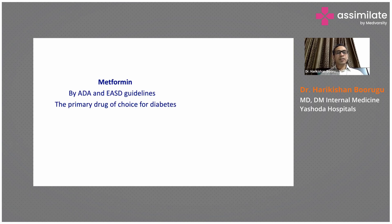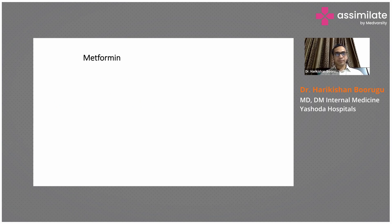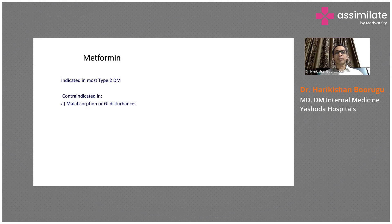Metformin is the primary or first-line drug recommended by most guidelines in a type 2 diabetic patient. It is indicated in most type 2 diabetes patients. It is contraindicated if the patient has malabsorption or significant GI disturbances, because metformin can worsen gastrointestinal problems like diarrhea and vomiting.